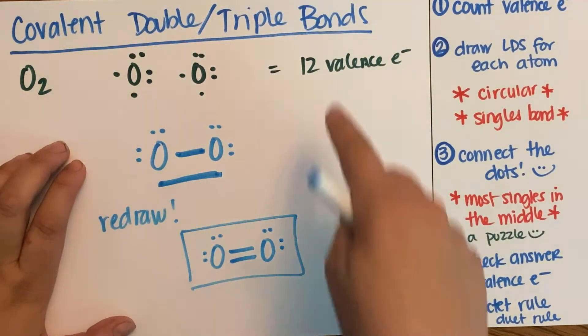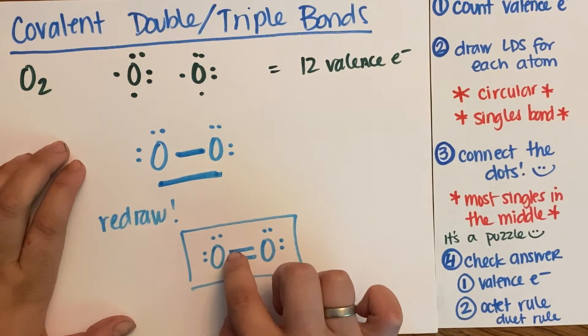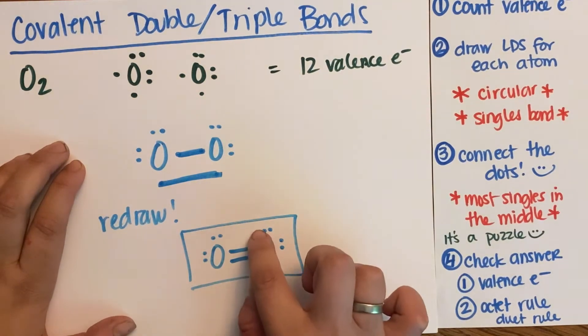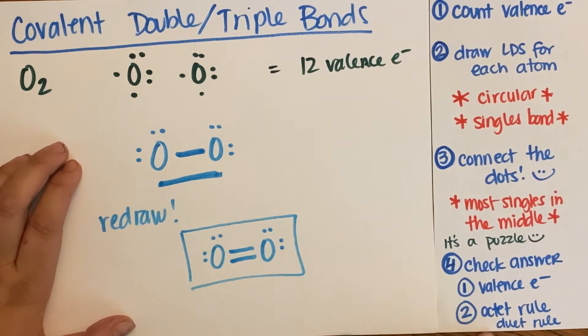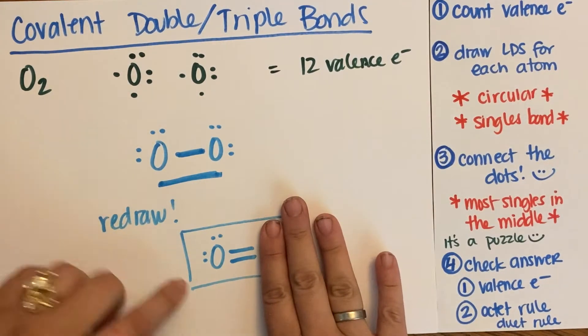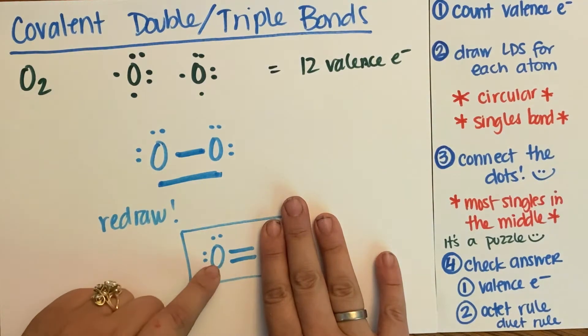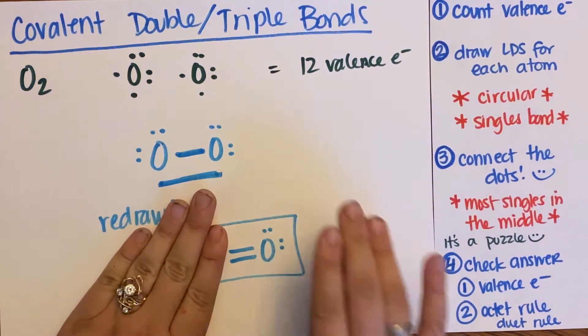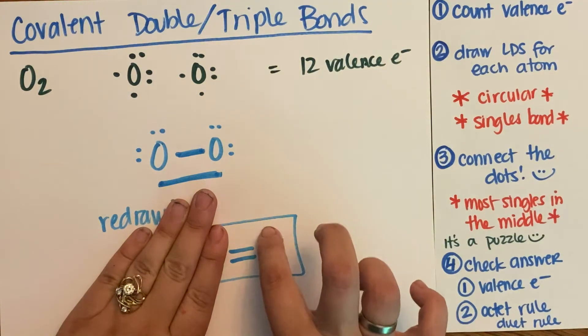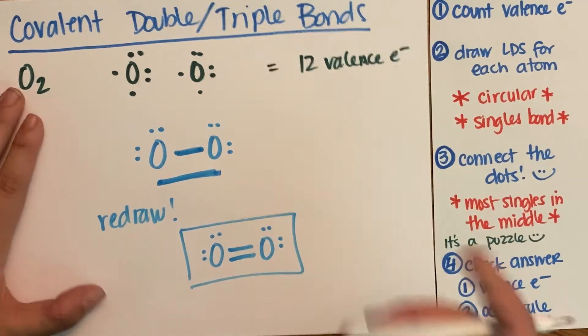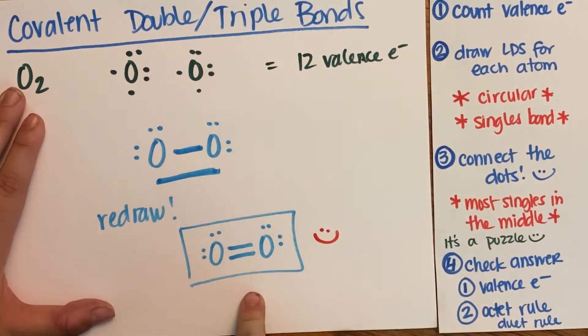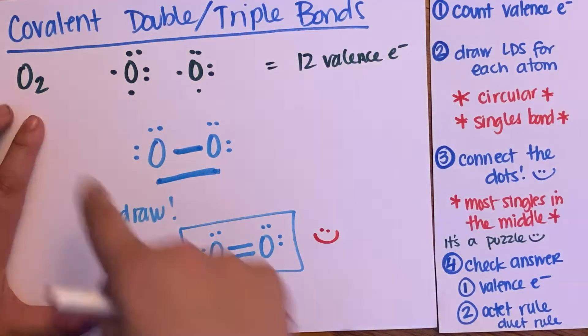And you can check your work. Do I have 12 valence electrons still? One, two, three, four, six, eight, nine, ten, eleven, twelve. That checks out. Does each oxygen fulfill its octet rule? Well, ignore this oxygen, and you have one, two, three, four, six, eight. So this oxygen is stable. Ignore that guy and count up here. One, two, three, four, six, eight. So this oxygen fulfills his octet rule. So this is the proper covalent molecule structure for O₂ gas.